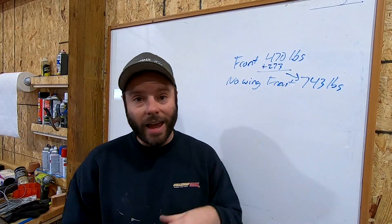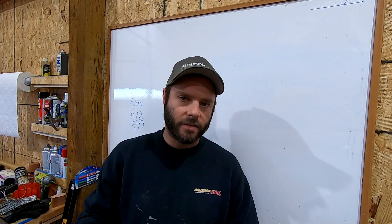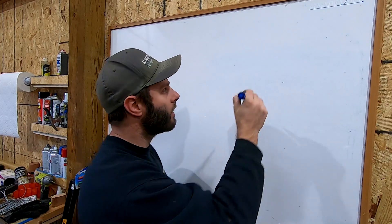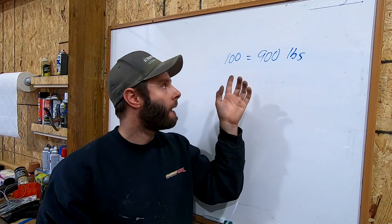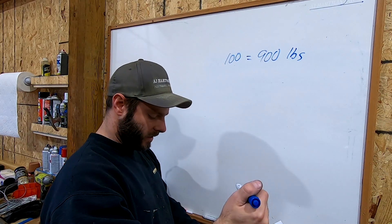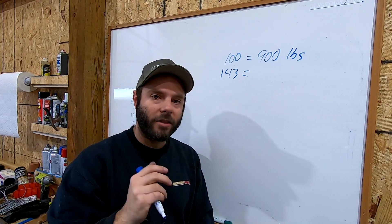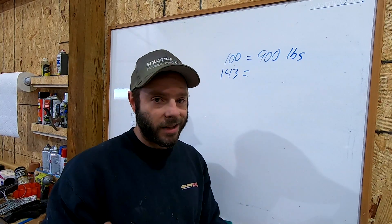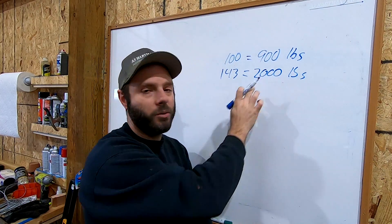If you're talking about a car that's going to be raced on track, you want to shoot for balanced downforce. My car made 900 pounds at 100 miles an hour. And since increasing speed increases downforce exponentially, a fun fact: at 143 miles an hour — right about where I get on the brakes at the end of a straightaway in my ST3 car — I hit the one-ton mark, which is pretty cool.